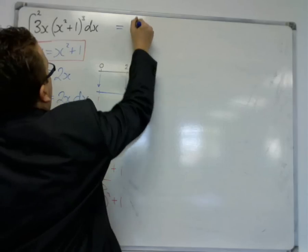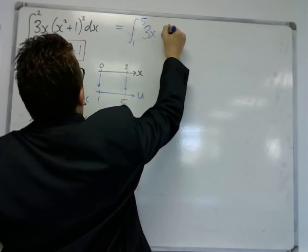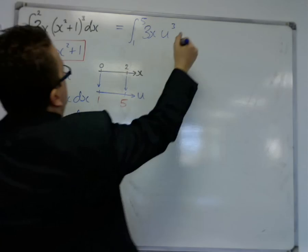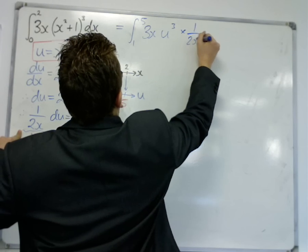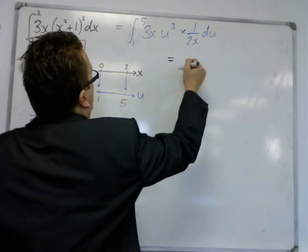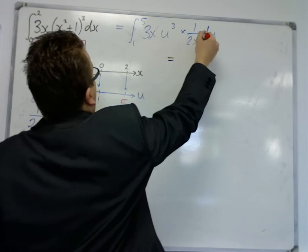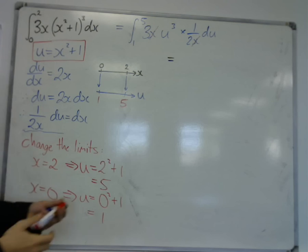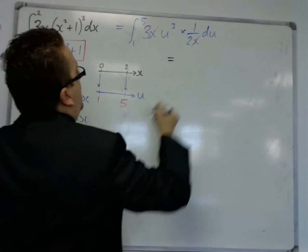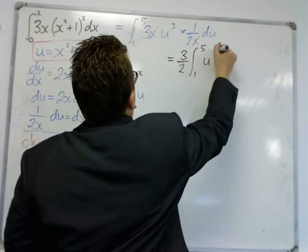So, we're now integrating between 1 and 5, 3x, u to the cubed, and dx has been replaced, remember, with 1 over 2x, du. Now, you should notice, like in the other examples, we have, in this case, an x and an x can cancel because we've got x divided by x. We've also got this 3 over 2, which can be brought outside of the integral sign, u cubed, du.